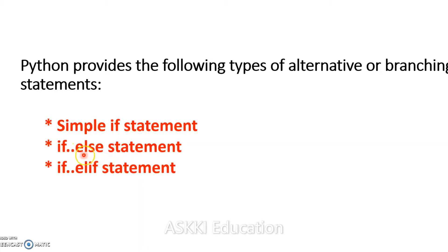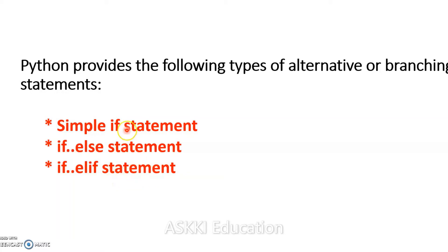The if-else statement is called the two-way branching statement. And the if-elif statement checks multiple conditions one below the other — we call this the if-else-if ladder. We will detail each of these statements.